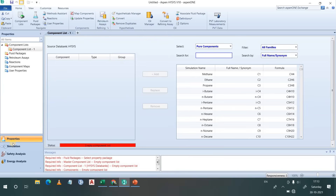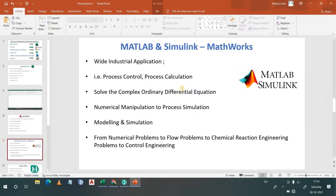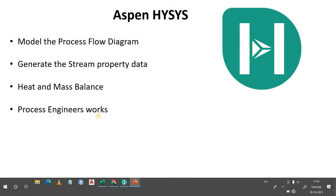Looking at the Aspen HYSYS v10 interface, you can see options for property simulation, safety analysis, and energy analysis. In upcoming videos we will see how to use Aspen HYSYS. This is one of the best and most evergreen softwares for chemical engineers — very core for P&ID and process flow diagram work, and very useful as a process simulator.